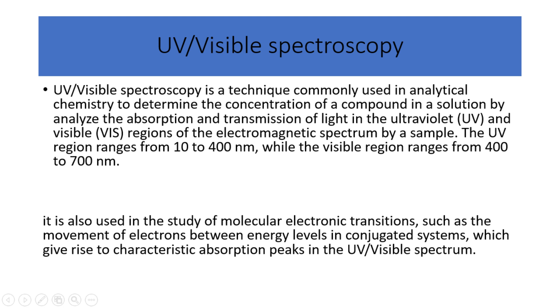The UV region ranges from 10 to 400 nanometers, while the visible region ranges from 400 to 700 nanometers. It is also used in the study of molecular electronic transitions, such as the movement of electrons between energy levels in conjugated systems, which give rise to characteristic absorption peaks in the UV visible spectrum.